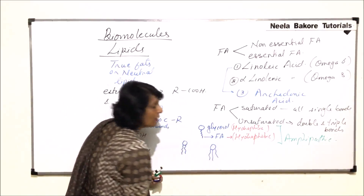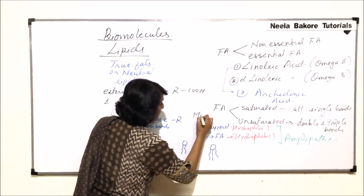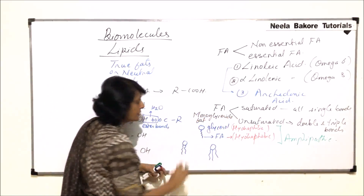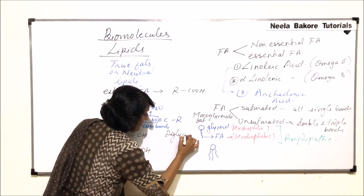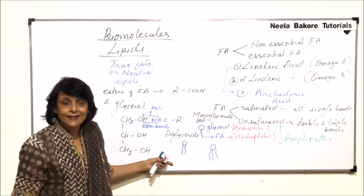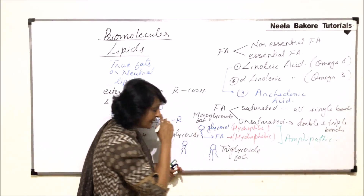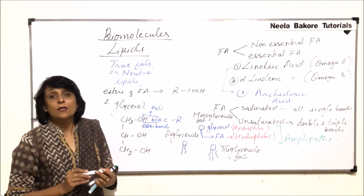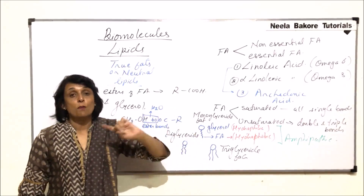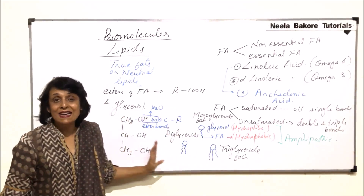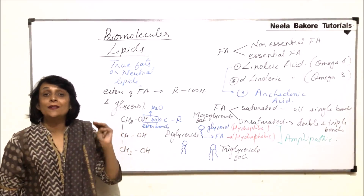If there is only one fatty acid attached to glycerol, we call it a monoglyceride. If there are two fatty acids, it is a diglyceride — one glycerol and two fatty acids. If there are three fatty acids, it is a triglyceride — one glycerol and three fatty acid molecules. So depending on how many fatty acids are attached, we can have mono-, di-, and triglycerides. In a monoglyceride there is one ester bond, in a diglyceride two, and in a triglyceride three ester bonds.